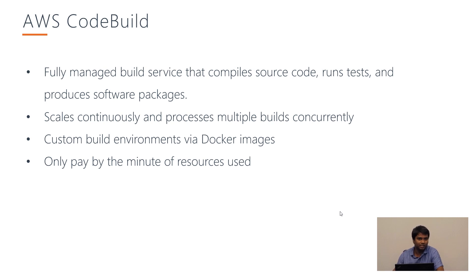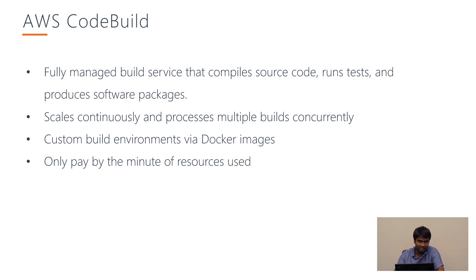Let's move on to AWS CodeBuild. AWS CodeBuild is a fully managed build service that compiles code, runs tests, and produces software packages — and it may even do deployments if we configure the commands. CodeBuild can scale continuously and run several builds concurrently. A pretty cool thing is we can have our environment as Docker images — we don't have to use the default Node.js or Android images provided by AWS. We can define our own Docker image with a custom environment, artifacts, and software. As with most AWS services, we only pay by the minute of resource usage.